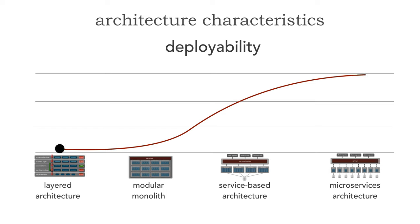It starts really with the layered architecture. Layered architectures don't lend themselves towards high degrees of deployability. When we talk about the ceremony involved, we have things like mock releases and code freezes. It's the coordination of multiple teams that really causes a lot of stress — we may have a presentation team managing the presentation layer, a backend team managing the business layer, a database team managing the database, and so on. The ceremony is quite a bit.